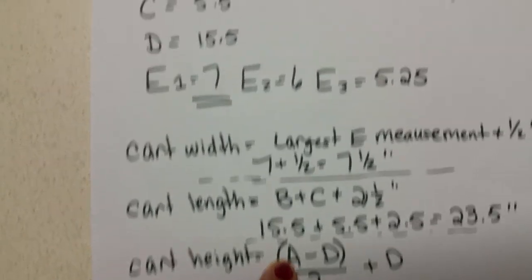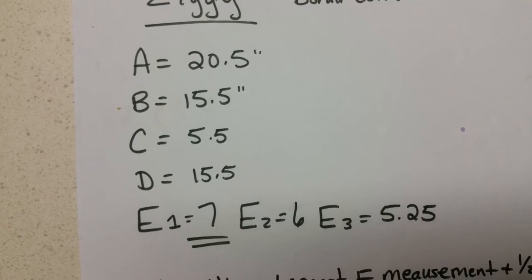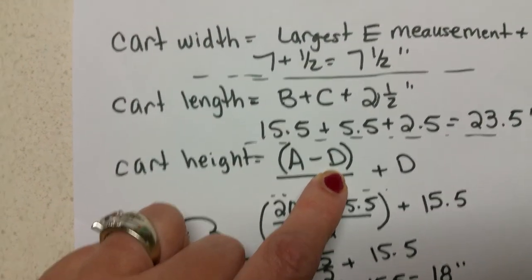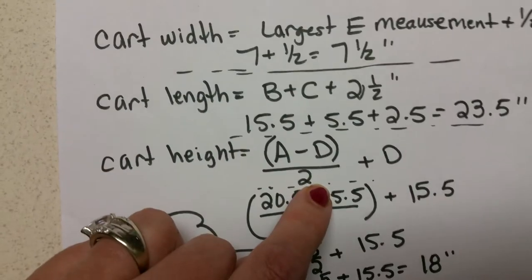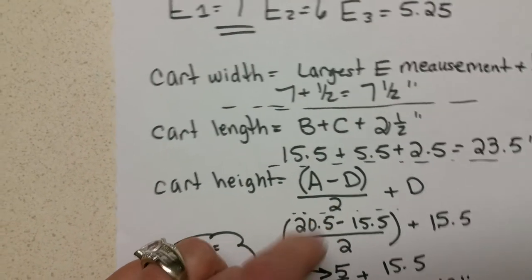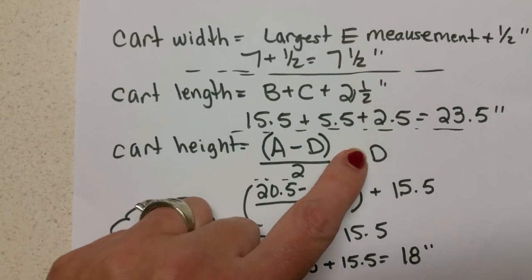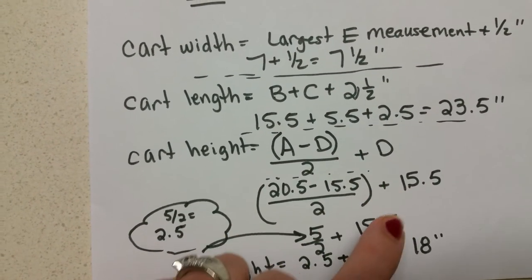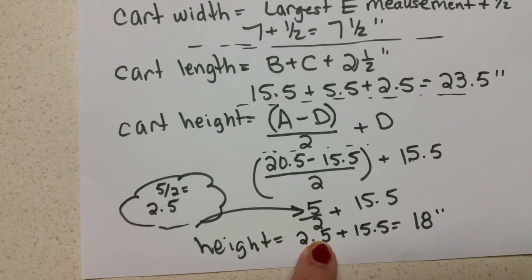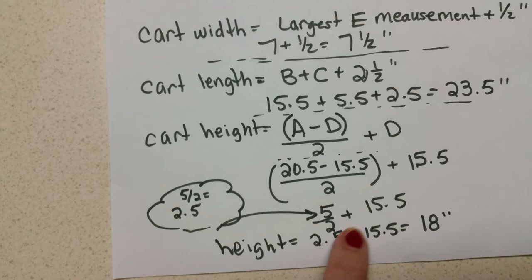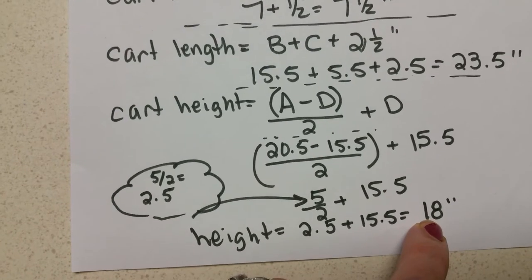To figure out the cart height we take A, which was the height from the dog from the ground to the shoulders. We subtract D, which was the groin height, the height from the ground to between the dog's legs. We find out that difference which happens to be five. Then we're going to divide that by two. And then we add that back onto D which was fifteen and a half. So the height, two goes into five two and a half times. So two and a half plus the groin height equals eighteen inches. So this cart is going to be eighteen inches tall.